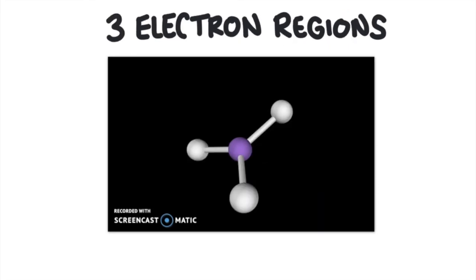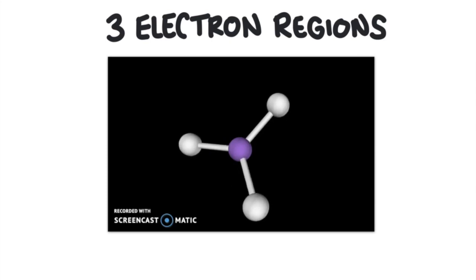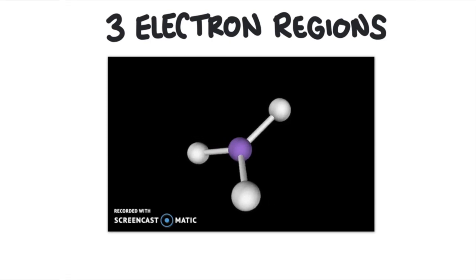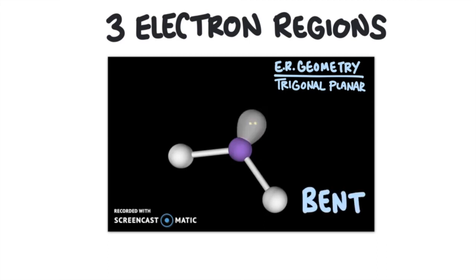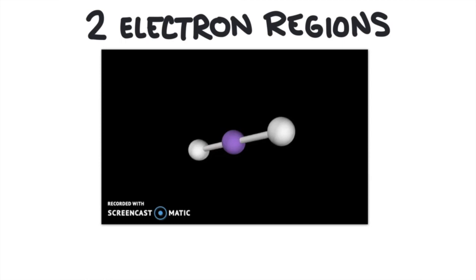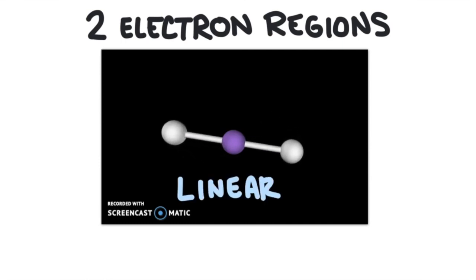Finally, let's look at different molecules that have three electron regions. Three bonds and no lone pairs will be trigonal planar. Two bonds and one lone pair will be bent once again. Each of these has the same number of electron domains but different molecular geometries. When there are two electron regions, we really only have one measurable shape — it's linear.